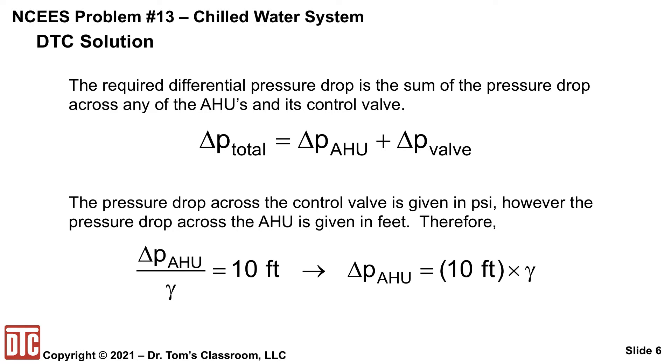So the 10 feet that you're given is delta P of the air handling unit divided by gamma. So you just need to multiply both sides by gamma. So the pressure drop across the air handling unit is just 10 feet times gamma.